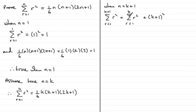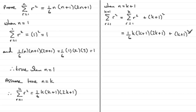That's when r is k plus 1. Now we can use the inductive assumption, substituting in one sixth k multiplied by k plus 1 multiplied by 2k plus 1, plus k plus 1 all squared. To prove this is true for n equals k plus 1, we expect to see one sixth times k plus 1. We can spot that one sixth and k plus 1 is a common factor in both terms.